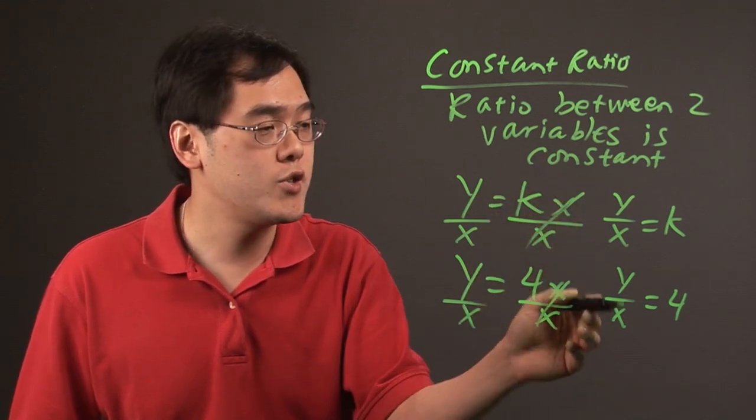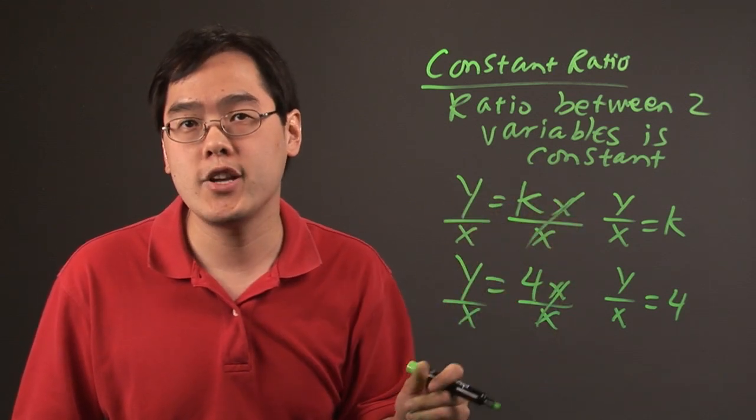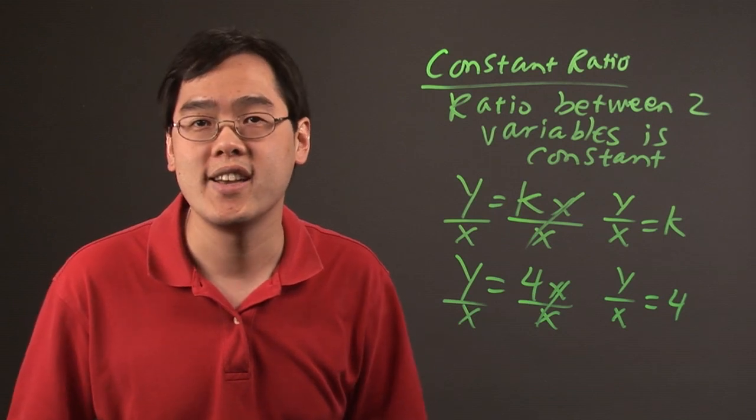Basically, as long as you have two variables divided by each other and you get a constant, you have a constant ratio.